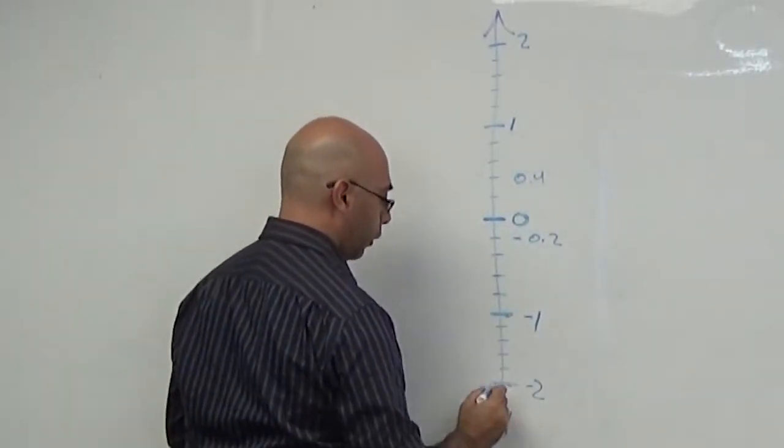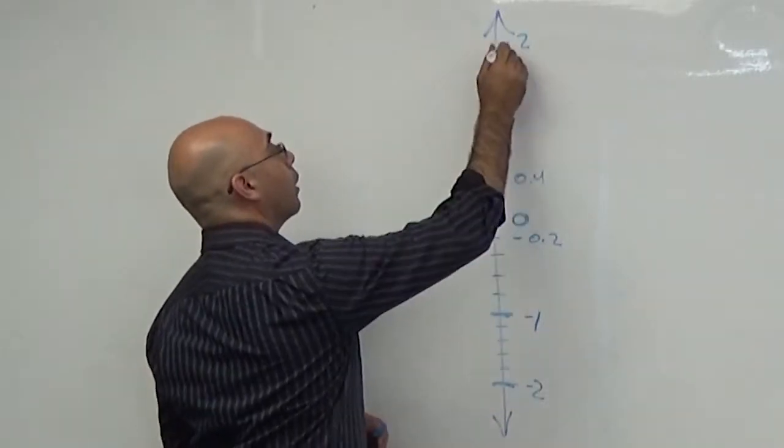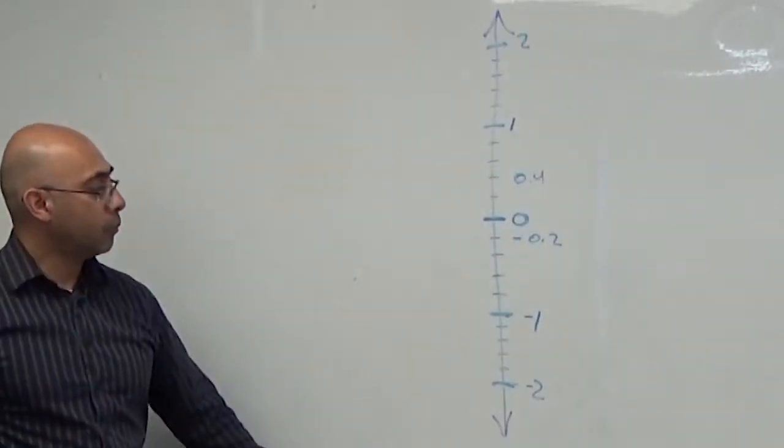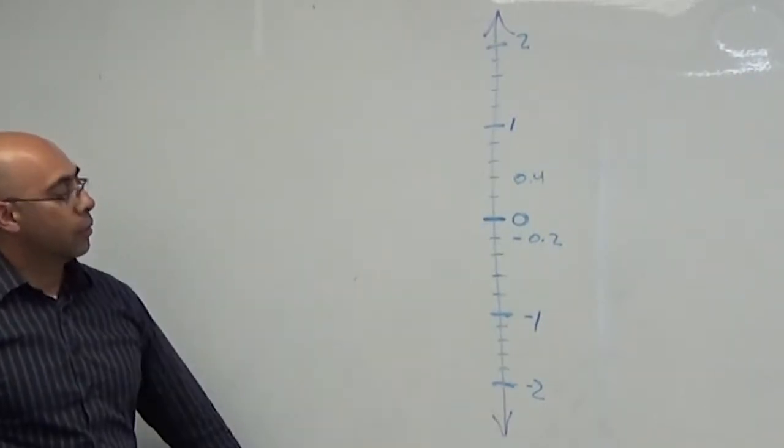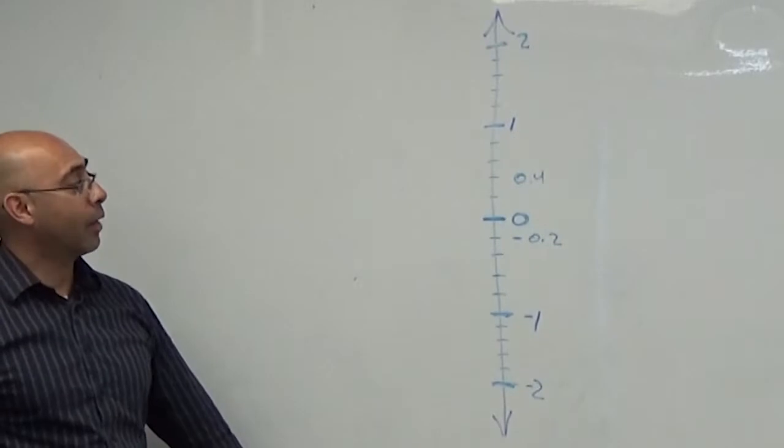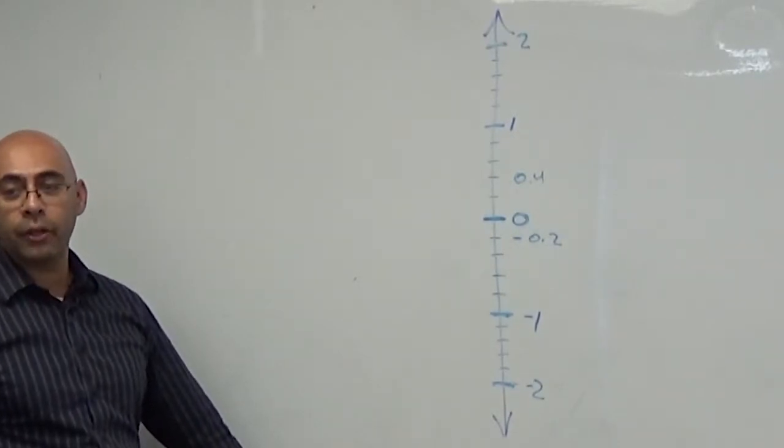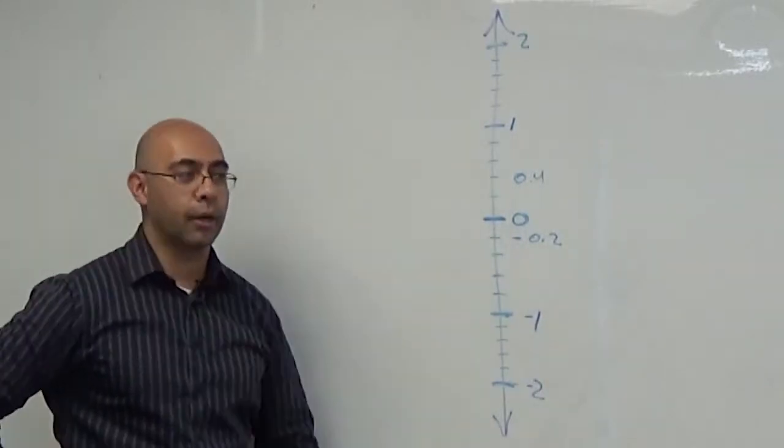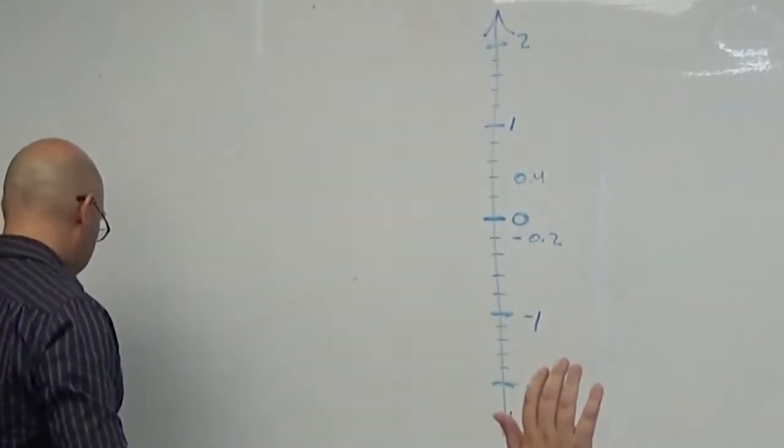All right boys and girls, take a look at this number line I have on the board here. You're just going to identify these points. Now the thing is, I don't have numbers on every little line here, do I? So how am I going to know what all these other numbers are?